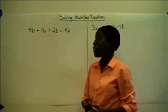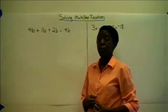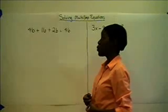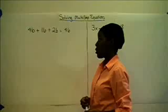Again, the point is to find the value of the variable, in this case b. So since we have two terms with b, we're going to combine those like terms.